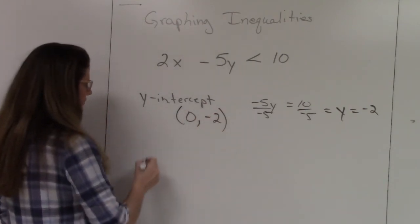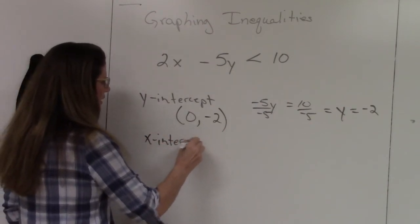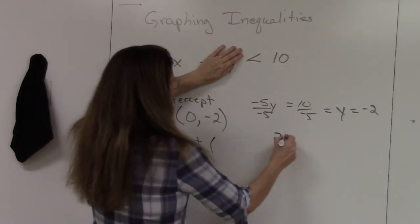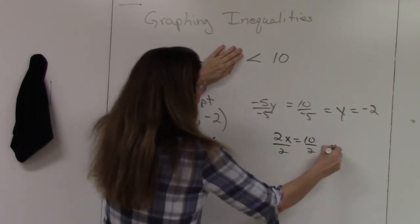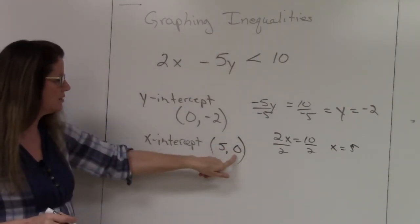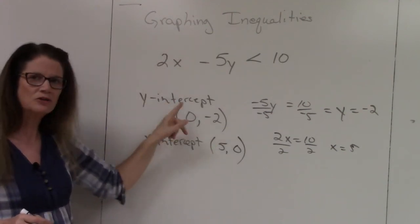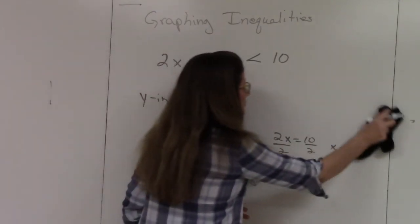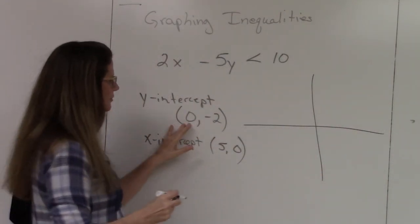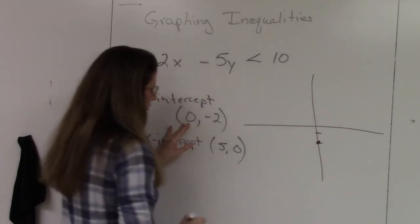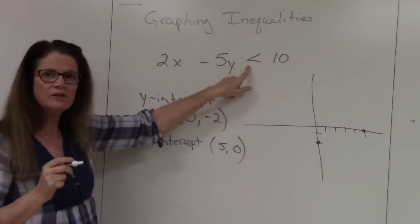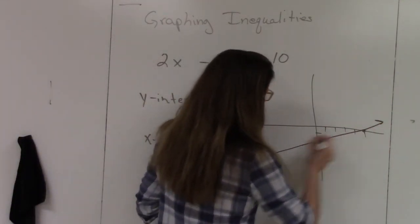For the x-intercept, cover up the y term — when y is zero — leaving 2x equals 10. Divide both sides by 2, so x equals 5. The x-intercept is (5, 0). Now graph it: plot the y-intercept at (0, -2) and the x-intercept at (5, 0), then connect them with a dotted line since this is a strict less than inequality.